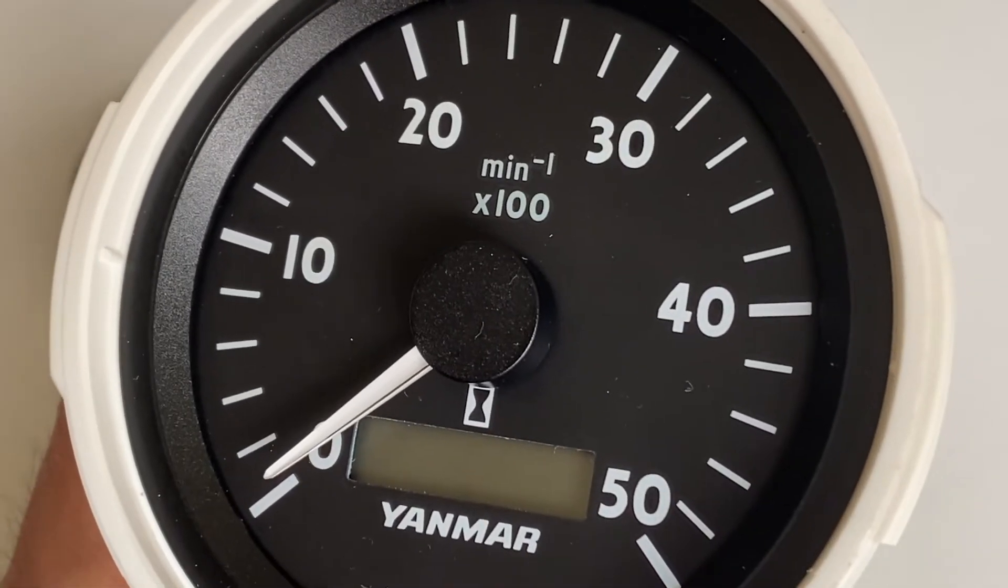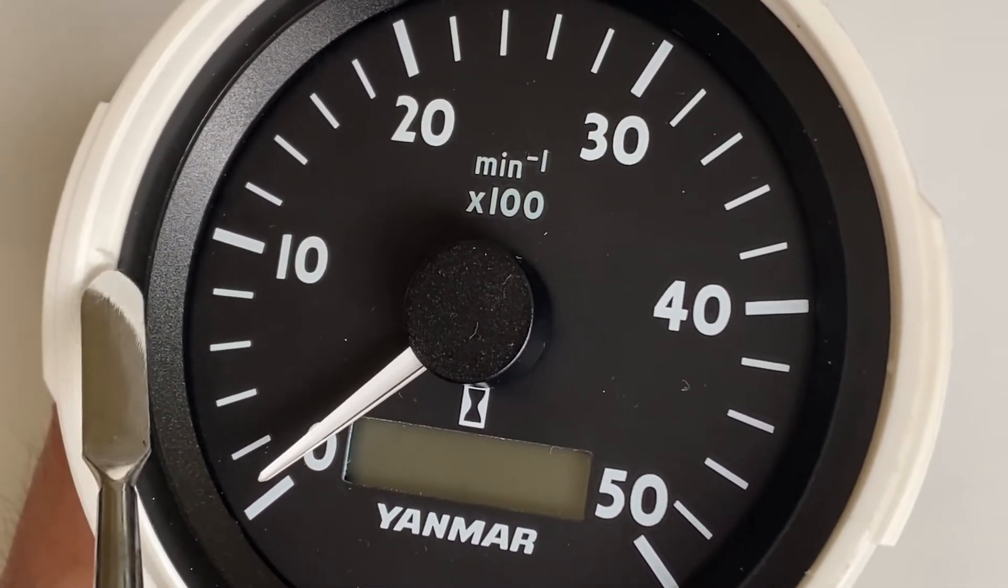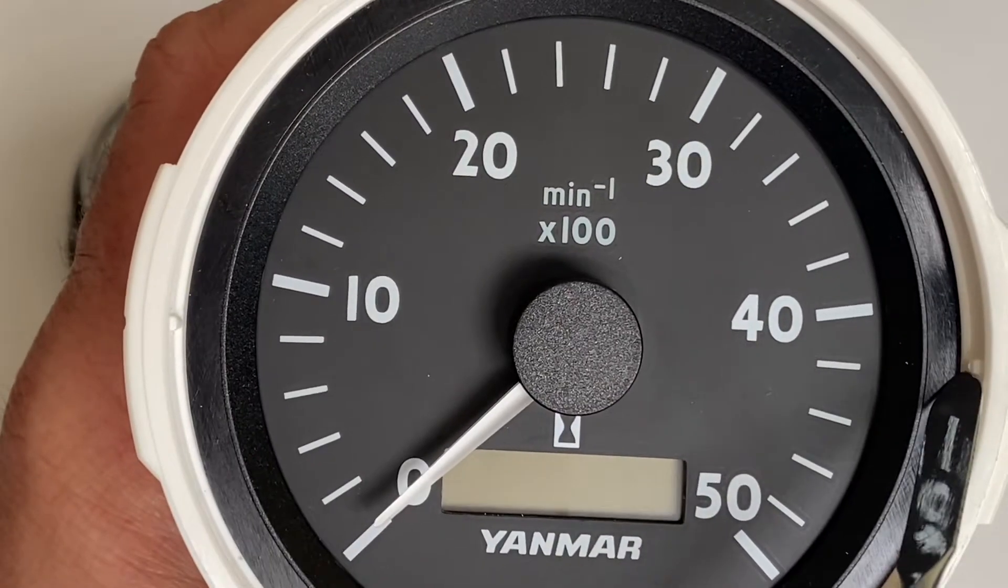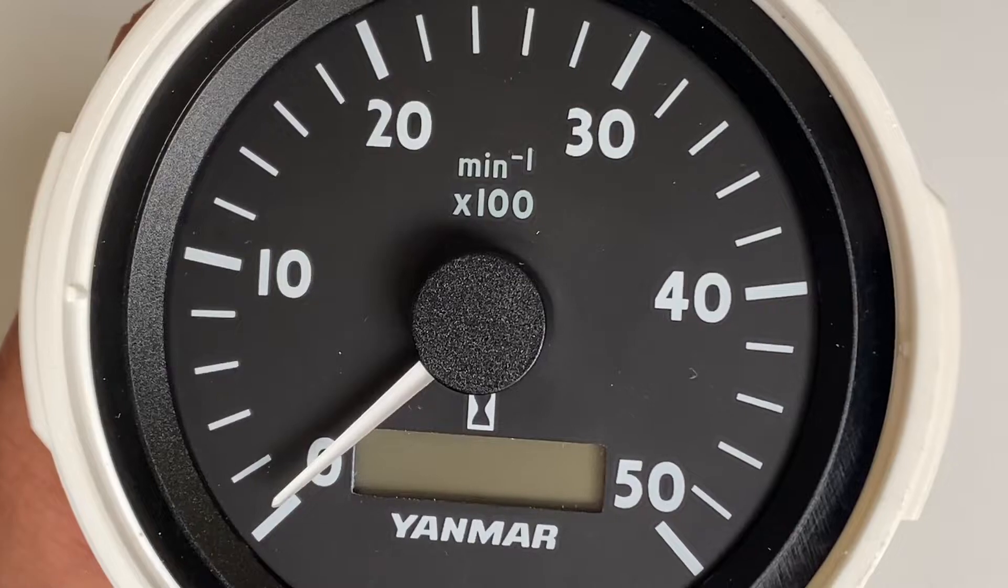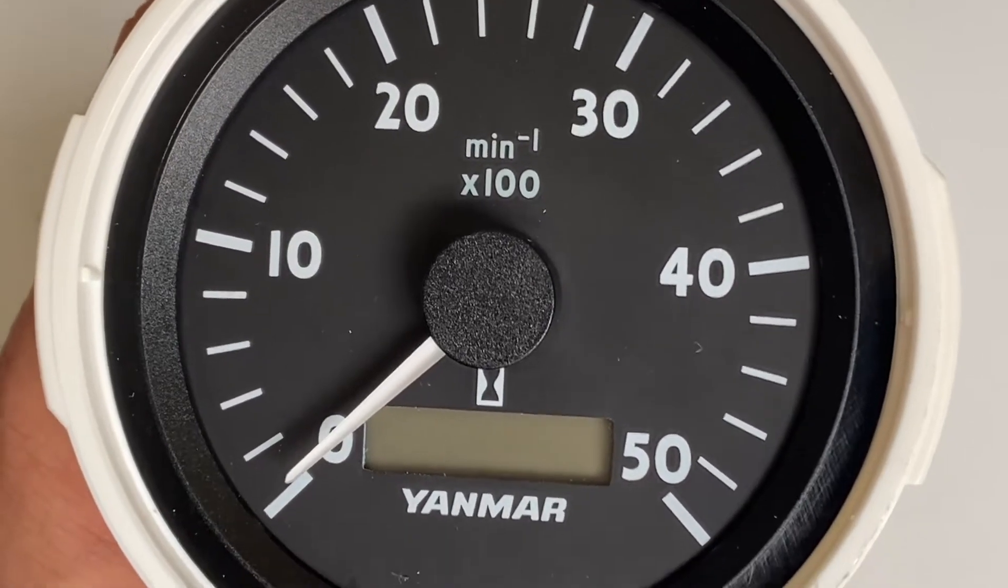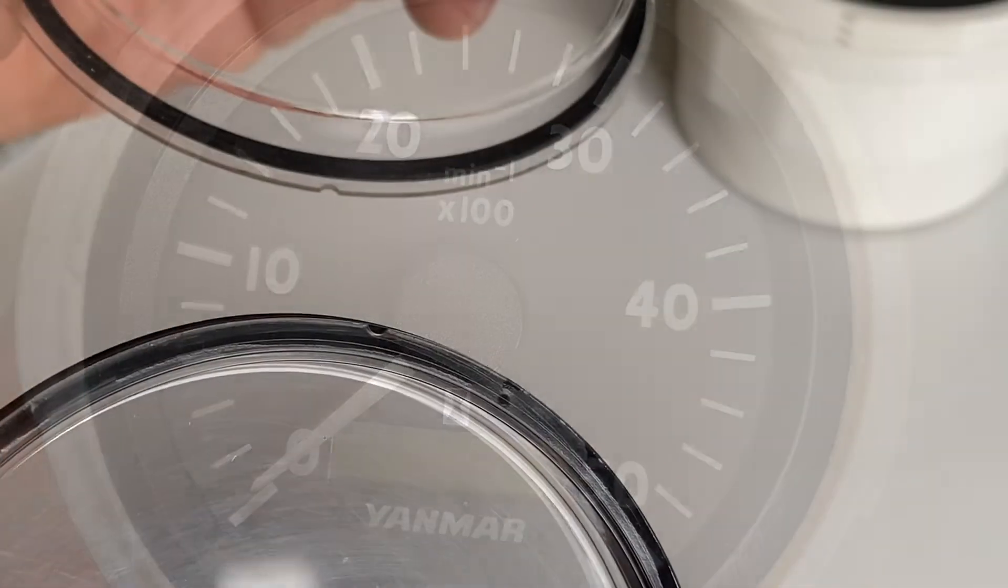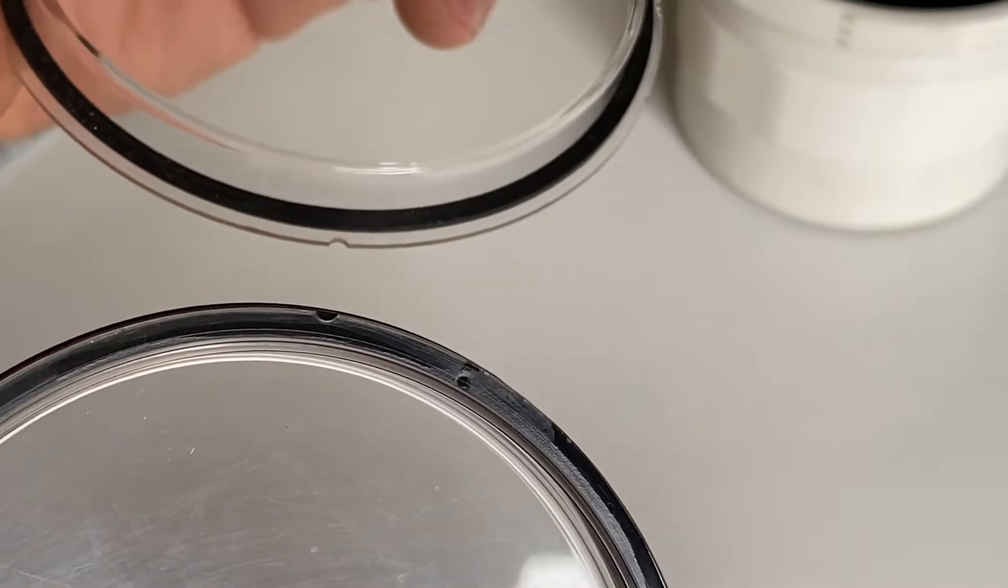It's worth noticing that at about the nine o'clock and the three o'clock you're gonna see two little tabs. Those tabs are used to landmark the lenses to put them back in place. Both of the lenses have slots cut out for those tabs.